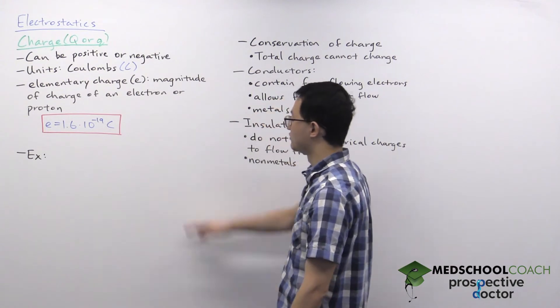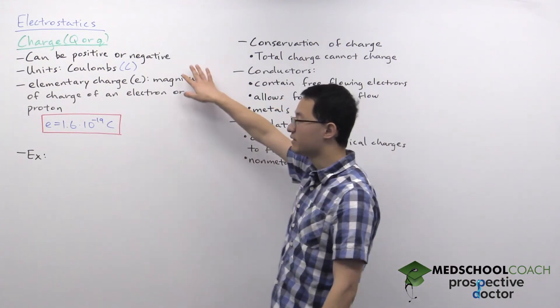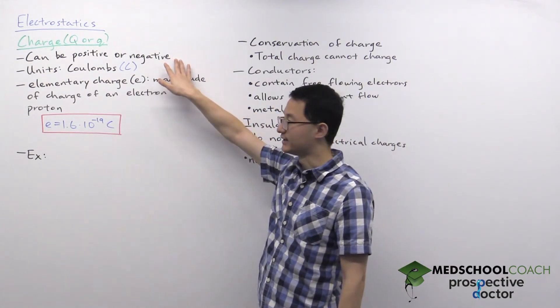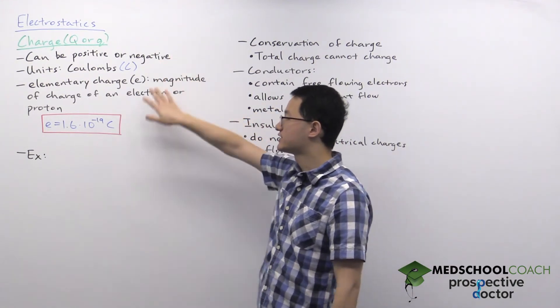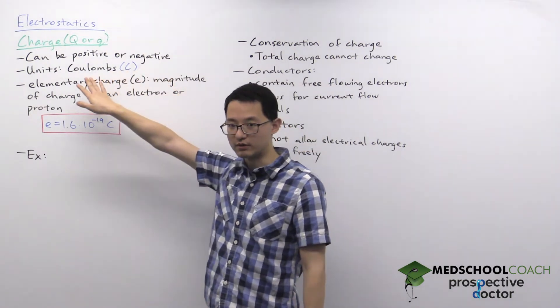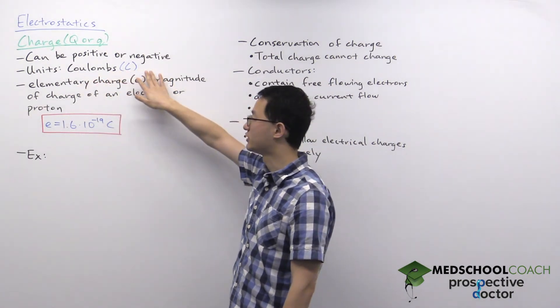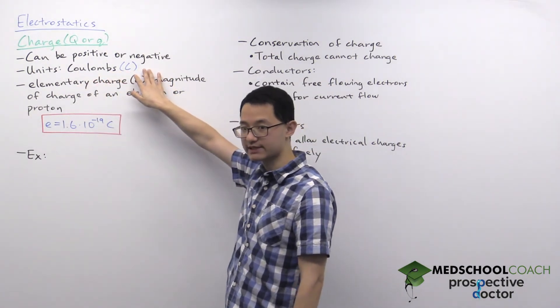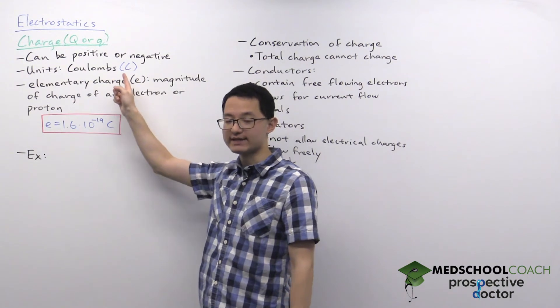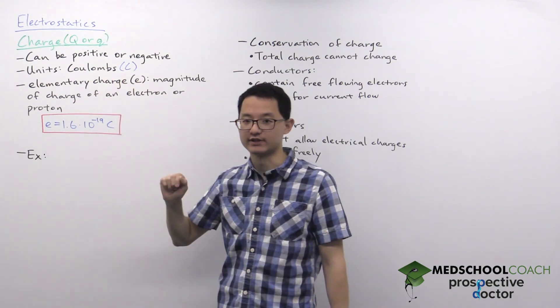Charge can be both positive or negative. The units that we have for charge are coulombs, which is denoted by capital C. This is another one of the basic SI units.